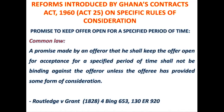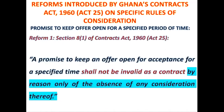But this position has been modified by Ghana's Contracts Act of 1960 Act 25. Section 8(1) of Ghana's Contracts Act of 1960 Act 25 provides that if you make a promise to keep an offer open for a specified period of time, say about eight months, and the other party has not given any form of consideration, according to Ghana's Contracts Act that promise shall be binding on you and shall not become unenforceable merely because the other party has failed to provide some form of consideration.